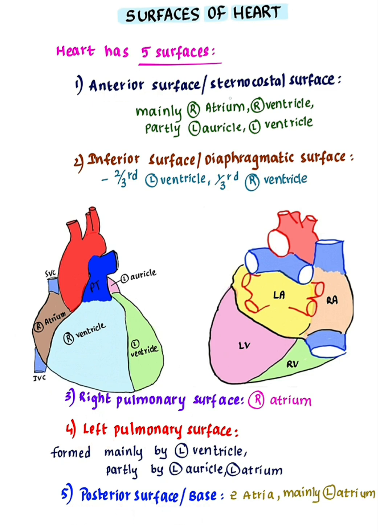Anterior surface or sternocostal surface. It is mainly formed by right atrium and right ventricle, and partly formed by left auricle and left ventricle. You can see that there is no left atrium on the anterior surface, as it is covered by the aorta and pulmonary trunk.